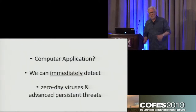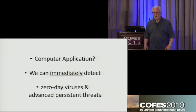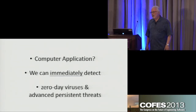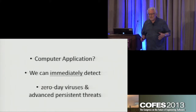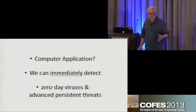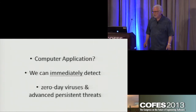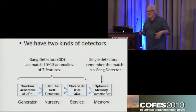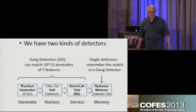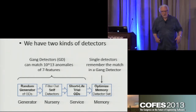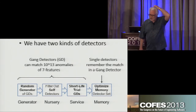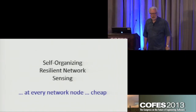What do you do with this if you have a computer application that needs something like proactive anomaly search? In this case, we're going to look for zero-day viruses and advanced persistent threats — things that have never been seen before that we don't have signatures for. We use a very similar four-stage process: a generator of random detectors, a nursery that makes sure we don't detect stuff of no interest to us, then we put them into service, and those that find something interesting we let stick around for a long time. We call this a self-organizing resilient network sensing capability.